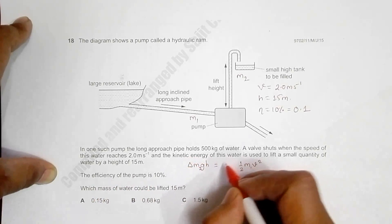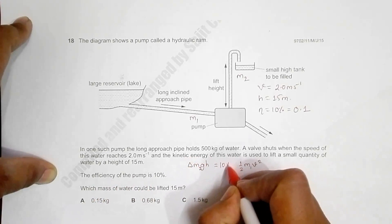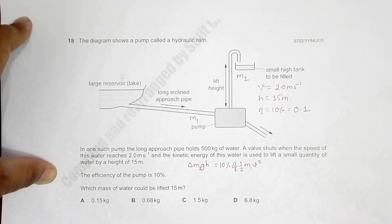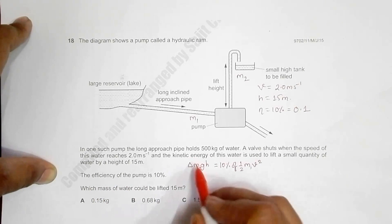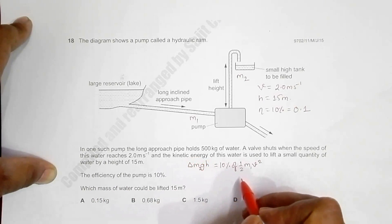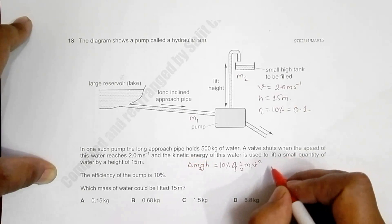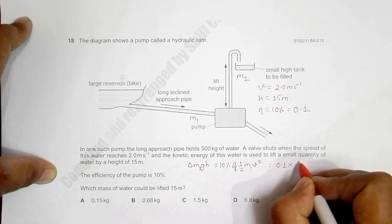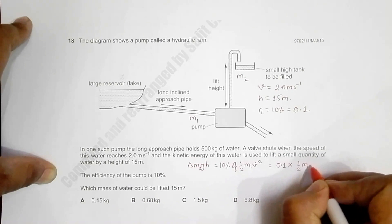And the efficiency of the pump is 10%, so that means this change of energy is just 10 percent of this KE. So because of the pump, this change of PE is just 10% of this KE. So that will be equal to 0.1 into 1/2 m1 v squared.